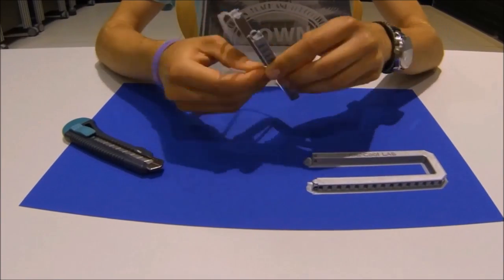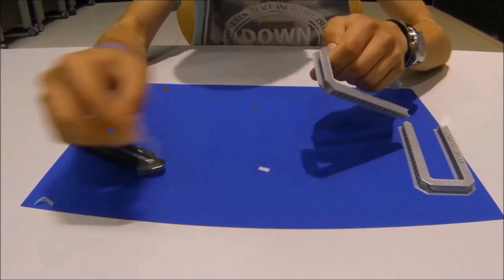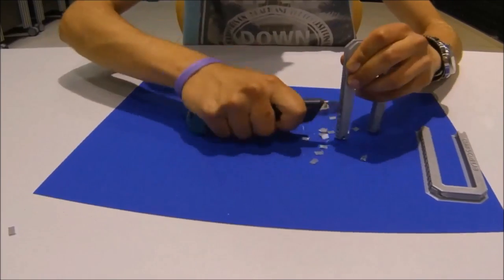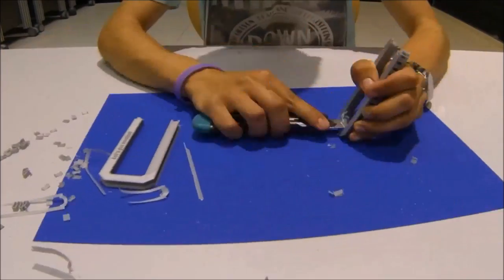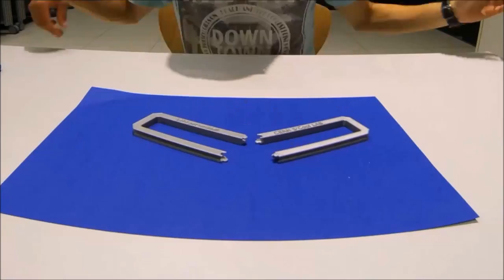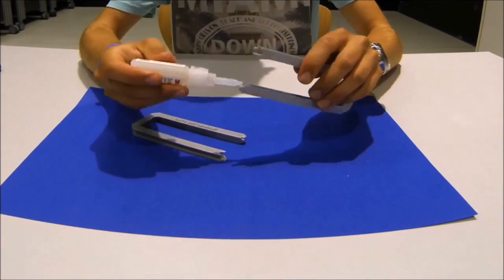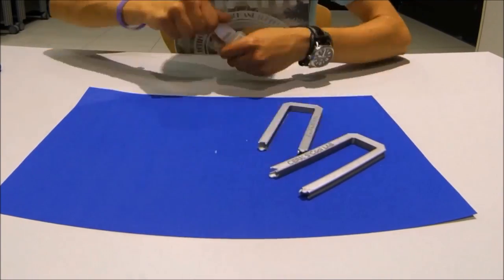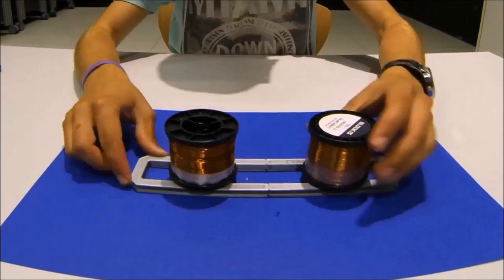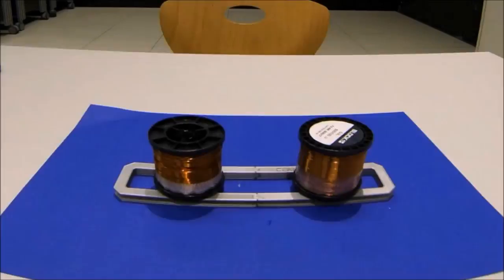Some pieces are better printed with support structures which must be removed afterwards. And for better results, the two halves of each coil frame can be glued together. Place it on a flat surface and wait while it dries.